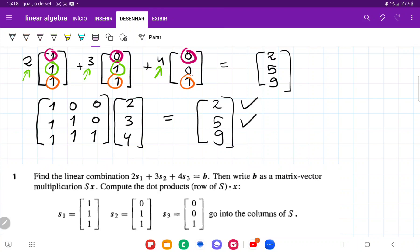Lastly, we do the dot product of the third row: 2 times 1 plus 3 times 1 plus 4 times 1. That is 2 plus 3 plus 4, which equals 9. Checks out. And that is it for item 1.